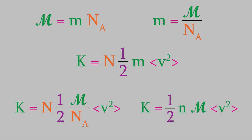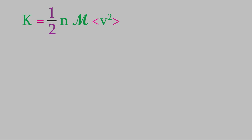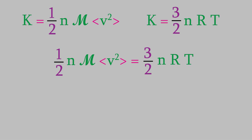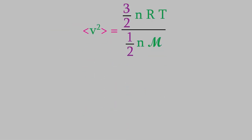The kinetic energy equals one-half times n (in moles) times M times the average squared velocity. Since we also know the kinetic energy equals three-halves nRT, we can set these two equations equal to each other. This is a pretty significant result — everything in this equation is easy to measure except for v squared. Solving for the average v squared gives 3RT over M, the molecular mass.